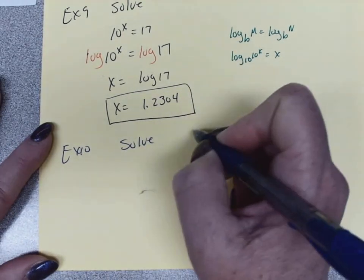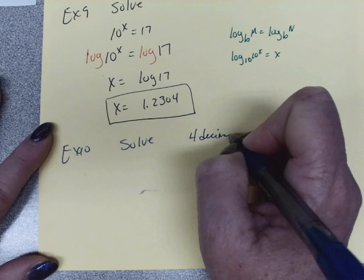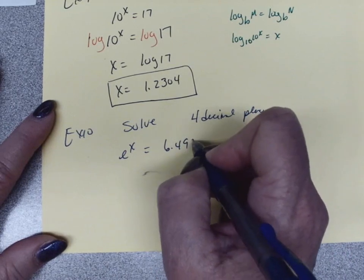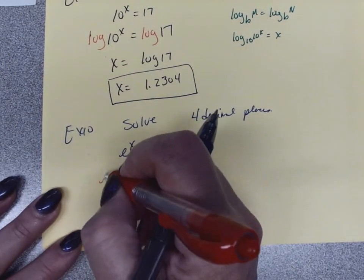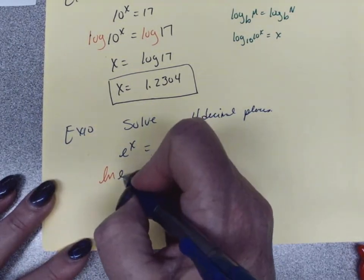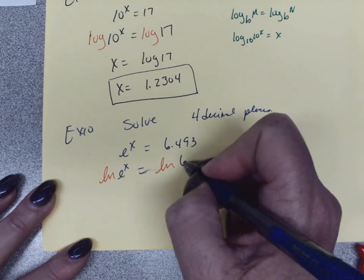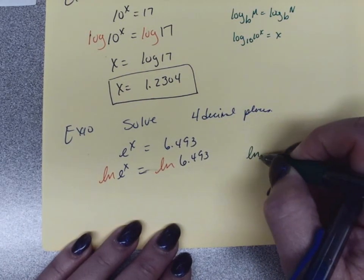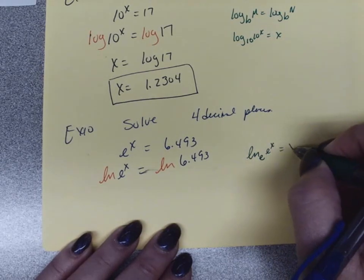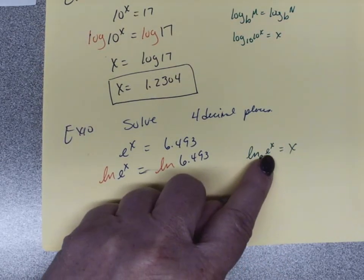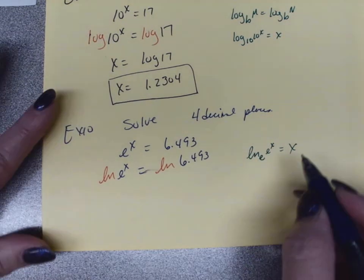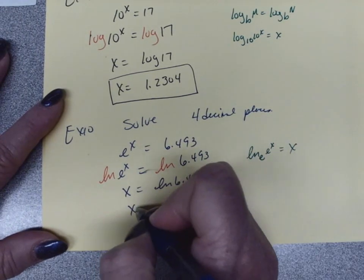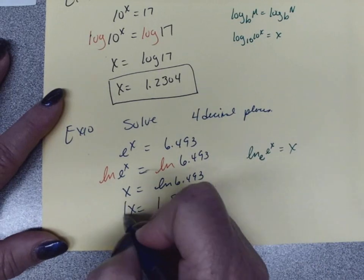Example 10: Solve e to the x equals 6.493 to four decimal places. Take the ln of both sides: ln of e to the x equals ln of 6.493. Since ln and e undo each other, the left side simplifies to x. So x equals ln of 6.493, which from the calculator gives approximately 1.8707.